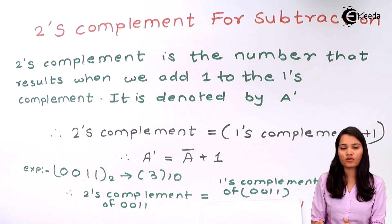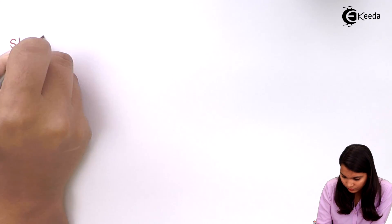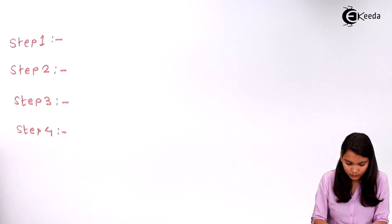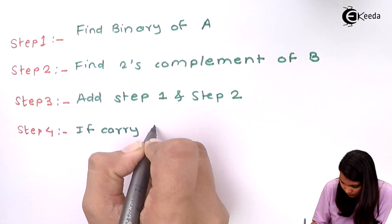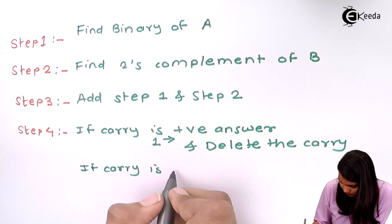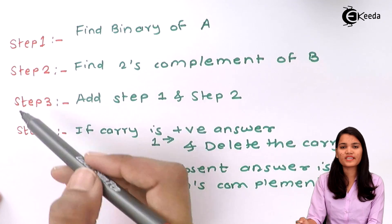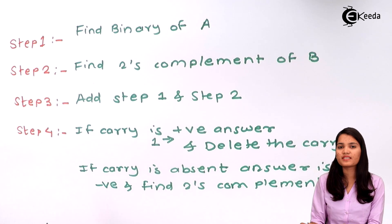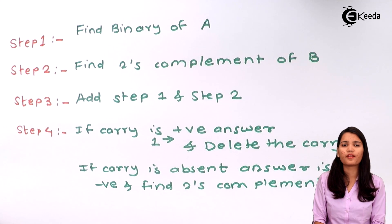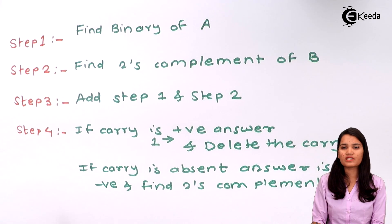Now let's see the step-by-step procedure to perform subtraction using the 2's complement method. These are the 4 steps, which are very similar to the 1's complement subtraction, but there is a minor change in step number 4. So let's go step by step.